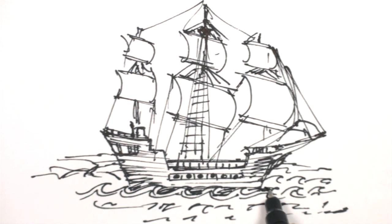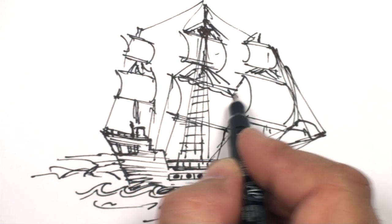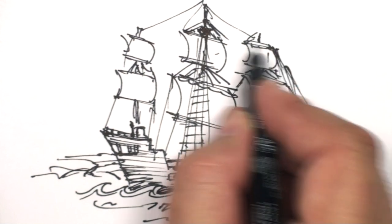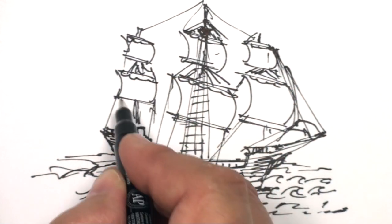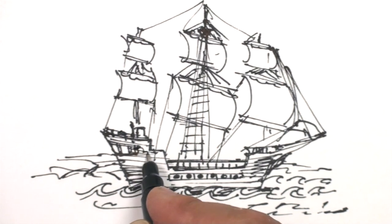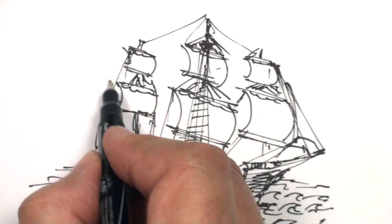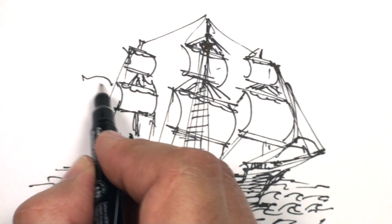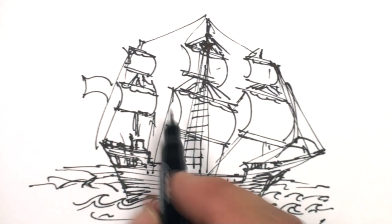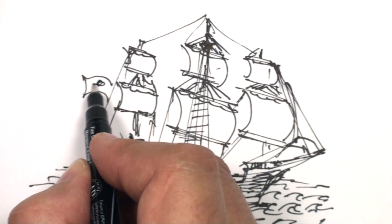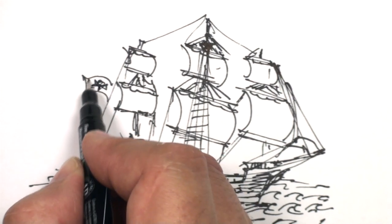And there's a little pirate ship. Oh yeah, how do we know it's a pirate ship? Well, because off the back, we're going to fly a little skull and crossbone pirate flag.